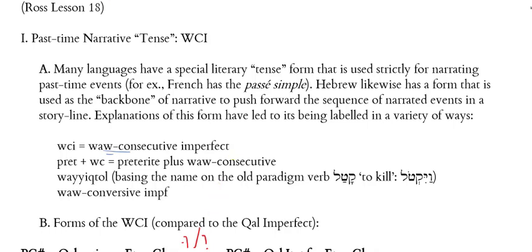Ross refers to this as the preterite plus vav consecutive — 'pret plus WC.' What he's getting at is that the form itself seems to be a preterite form. The word 'preterite' refers to a past tense form. People who use this language want to say the form used here is not technically speaking an imperfect — it looks like the imperfect, but it isn't. It's actually a prefix conjugation form called the preterite, with a special pointing with the vav. So they call these a preterite plus vav consecutive.